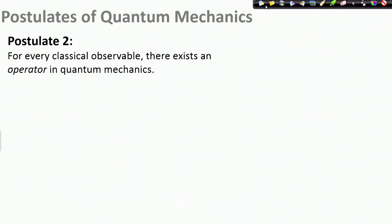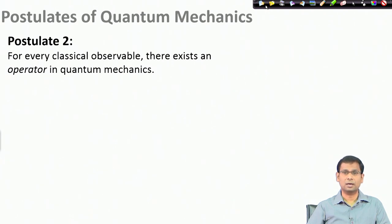The second postulate says that for every classical observable there exists an operator in quantum mechanics. So if we want to get some idea about a system, we must ask what we want to know about this system, and when we have answered that question — what property we want to measure — then the solution is to bring that operator which is provided by quantum mechanics. In today's lecture we will try to get some more ideas about what this operator is and how we can use it to get information about the quantum mechanical system.